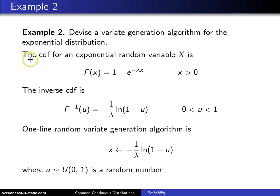The cumulative distribution function for an exponential random variable X is capital F of x equals 1 minus e to the minus lambda x for x greater than 0.